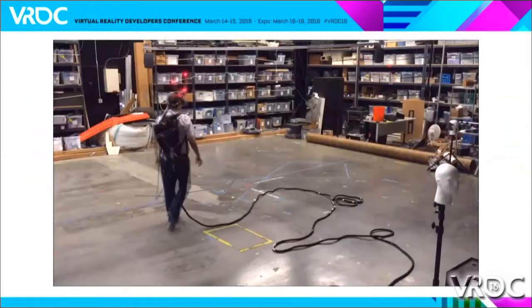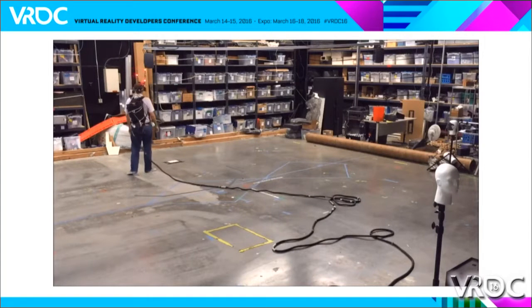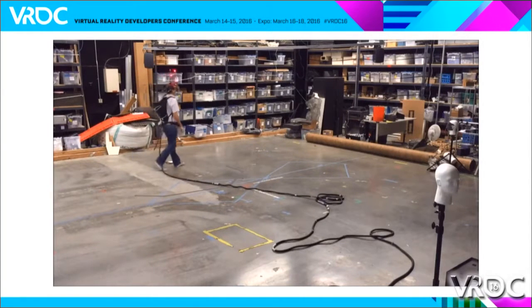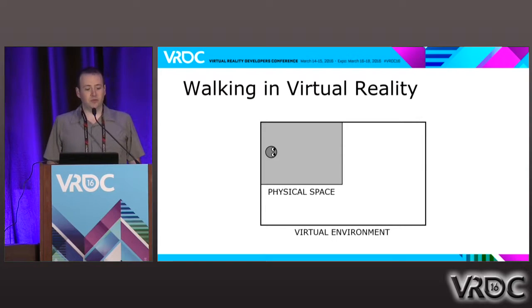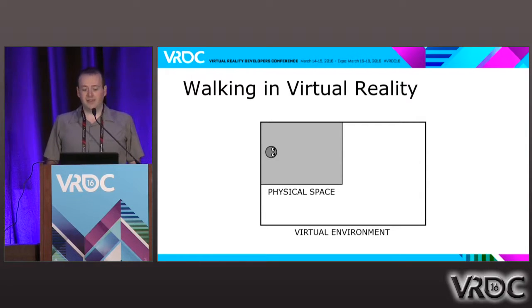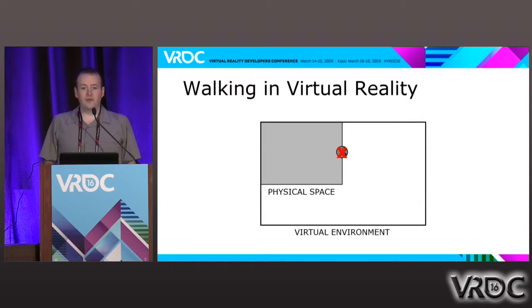I'm Evan Suma, research assistant professor at UNC Institute for Creative Technologies, where I co-direct the MXR or Mixed Reality Lab. I'd like to talk about one of the fundamental interaction challenges for virtual reality: human locomotion or movement in the VR environment, specifically natural walking. There's been increasing interest in room-scale VR, but in VR we often want to go through virtual worlds that are much larger. If we have a room-sized physical space, this introduces a problem: what happens when I run out of physical space? I'm going to exit the tracking area, or at worst collide into a wall and injure myself.